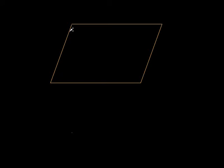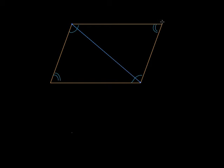What if I told you that this angle was equal to this angle — and also this angle and this angle were equal? Then guess what? It's a parallelogram. And what if the diagonals bisect each other — if this and this are equal, and this and this are equal to each other — then guess what this thing is? It's a parallelogram. Let me give you a worksheet and you can work on that tonight.